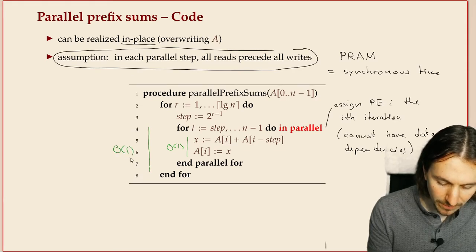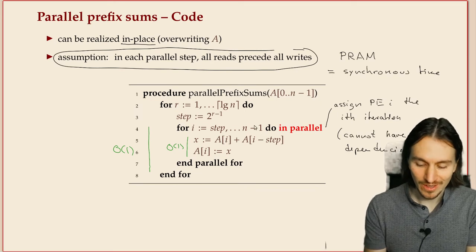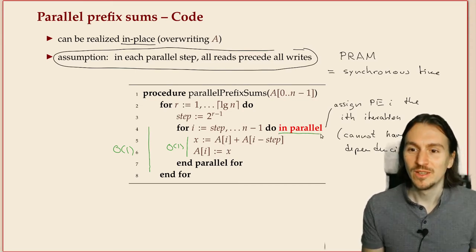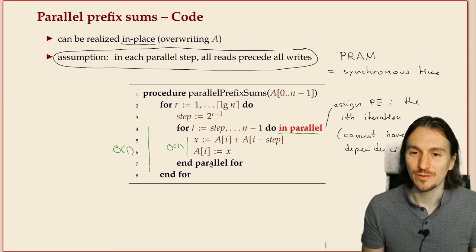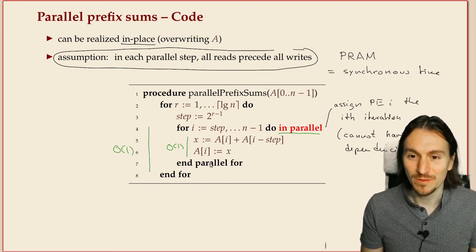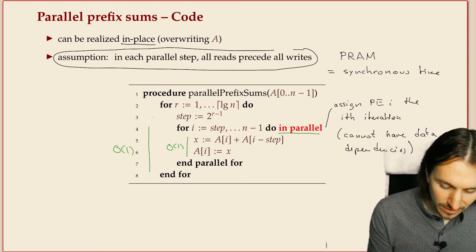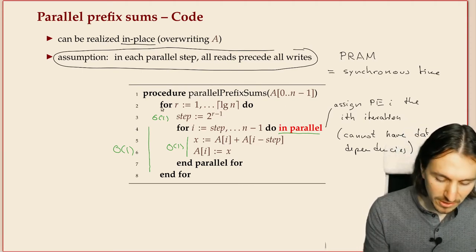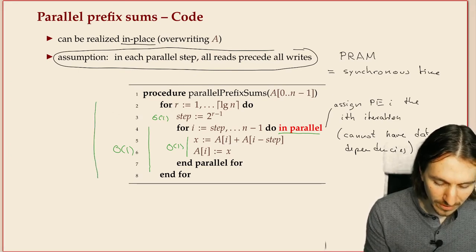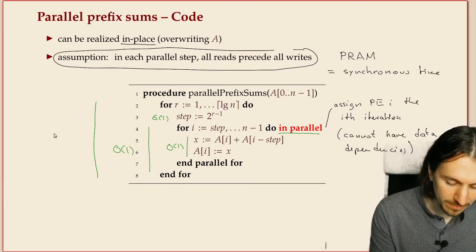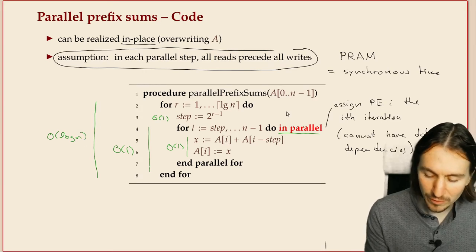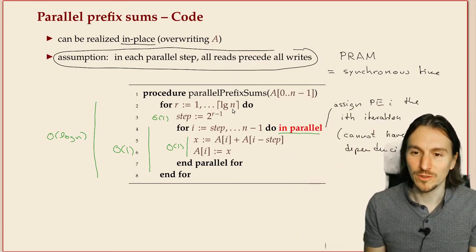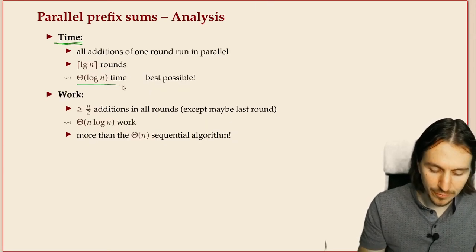How good is this algorithm? Let's first look at the parallel running time. Both the read and write steps take constant time because for each processor it's just reading two numbers, adding them, and writing a number back to memory. The inner for loop is also constant parallel time — the parallel time is just the time of the longest iteration, and since they all take constant time the entire for loop takes constant time. The only thing that contributes is the outer for loop, which takes log n time, because we must do each round sequentially, based on the results of the previous round.